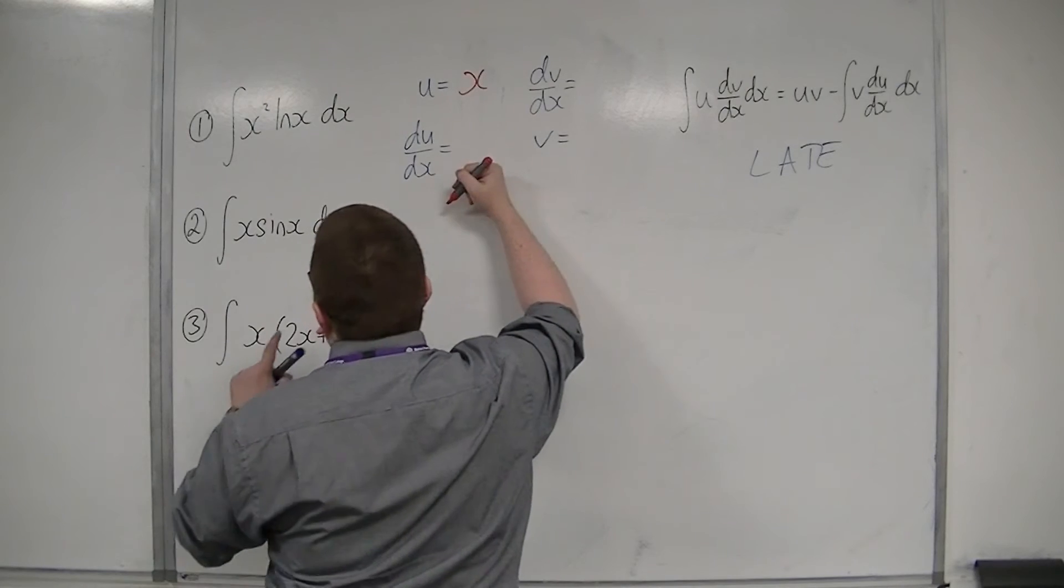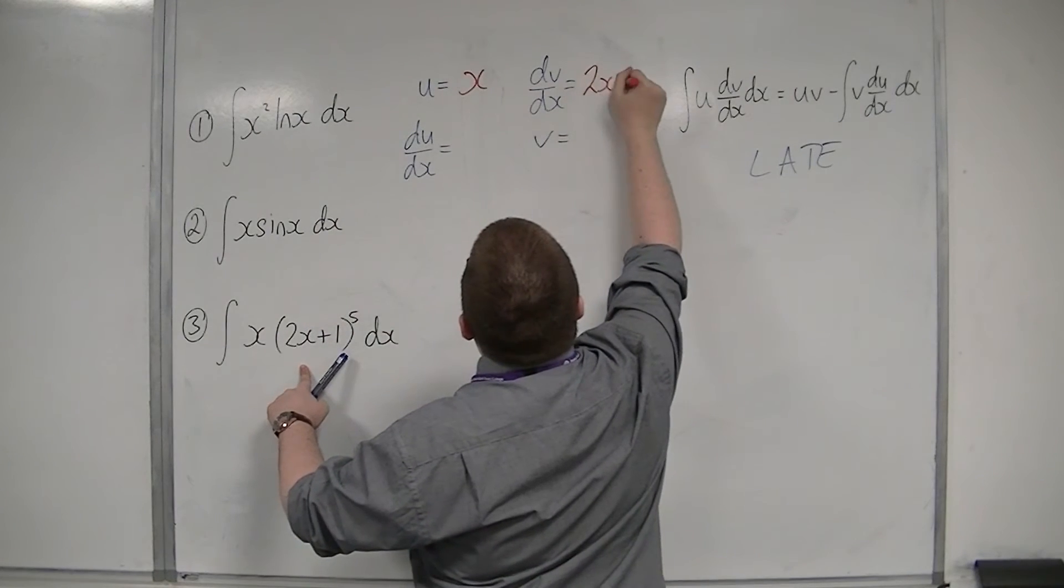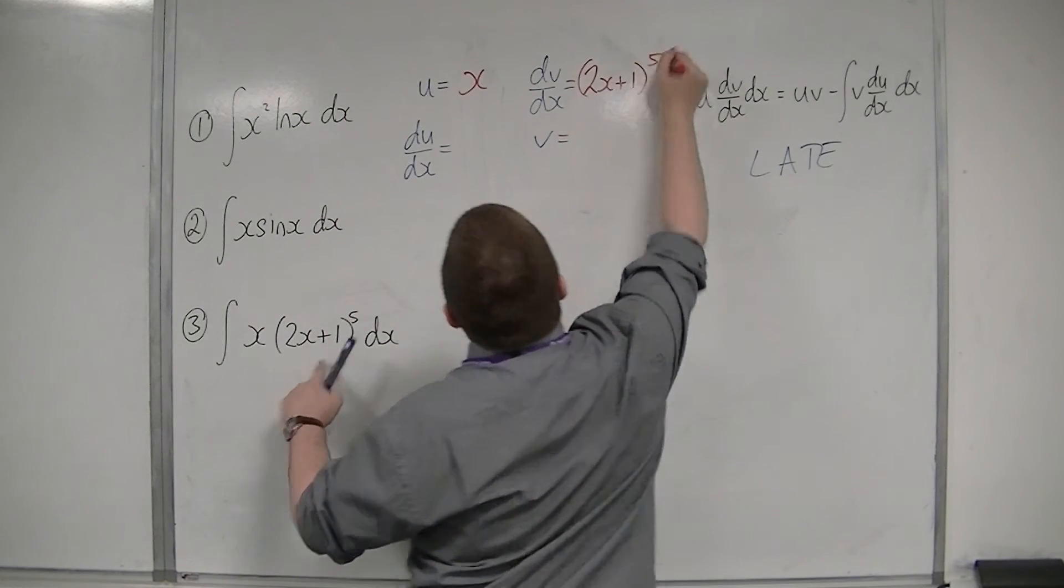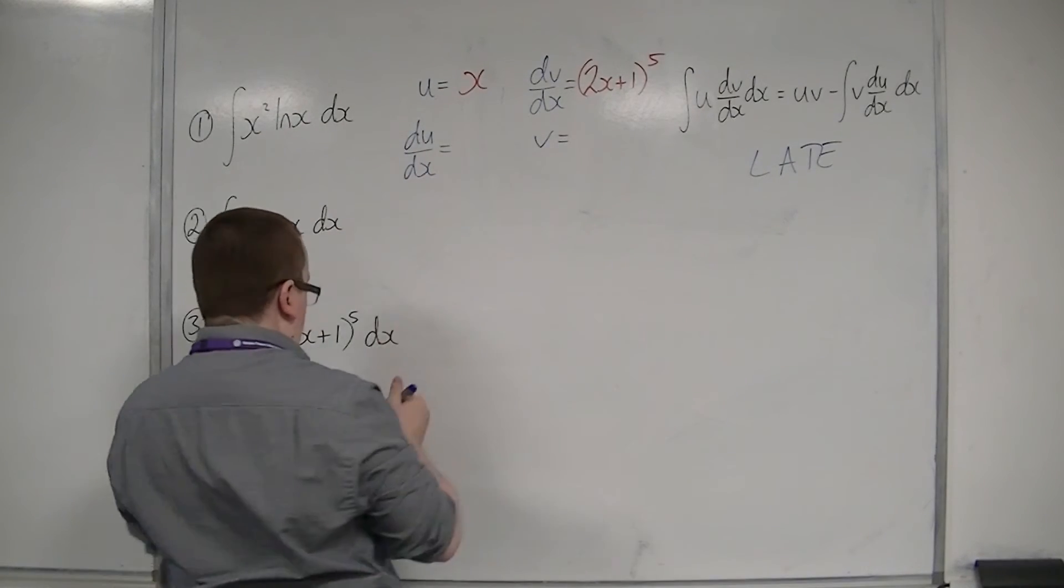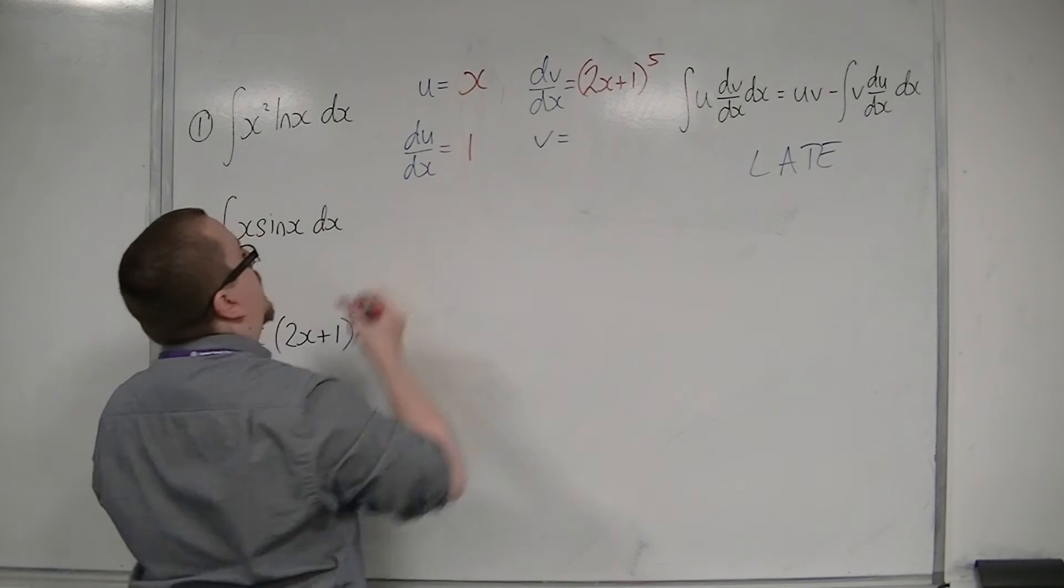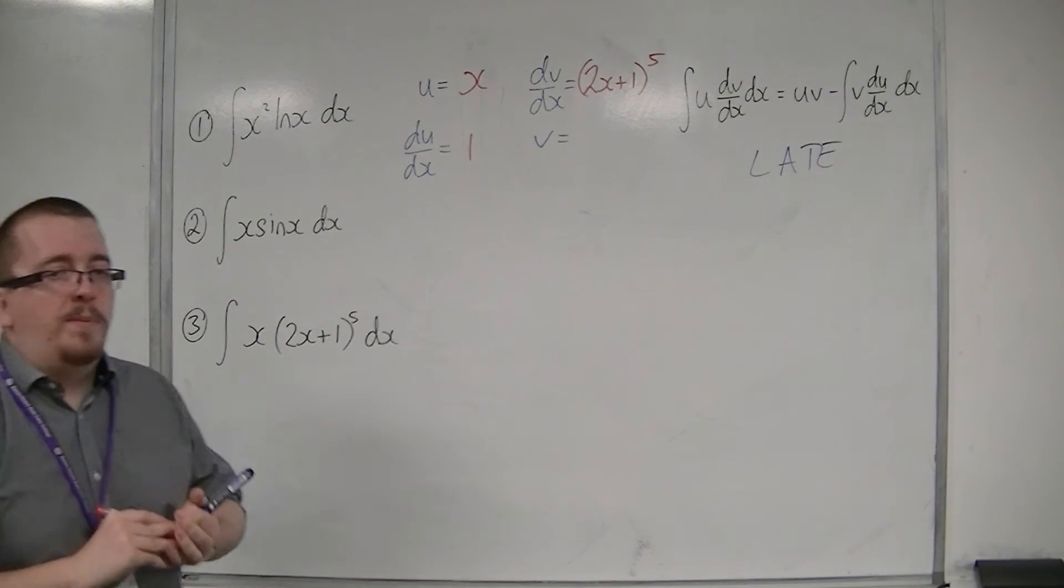So if u is equal to x, and dv by dx is 2x plus 1 to the 5. Then x differentiates to 1.